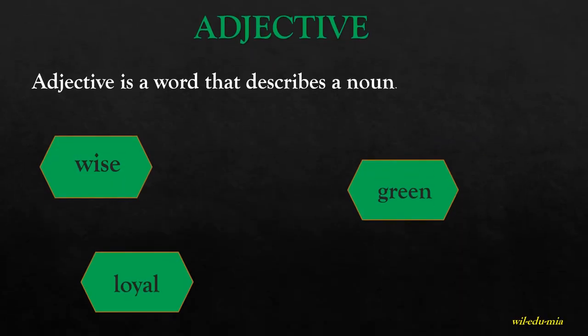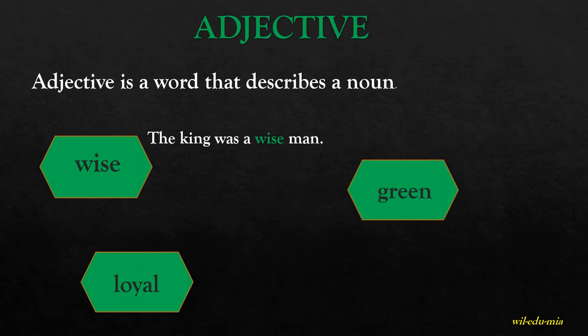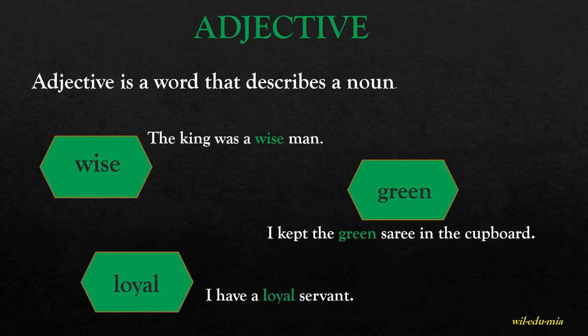Adjective. An adjective is a word that describes a noun. For example, 'The king was a wise man' — wise describes the king. 'I kept the green sari in the cupboard' — green describes the color of the sari. 'I have a loyal servant' — loyal describes the servant. So wise, green, and loyal are adjectives.